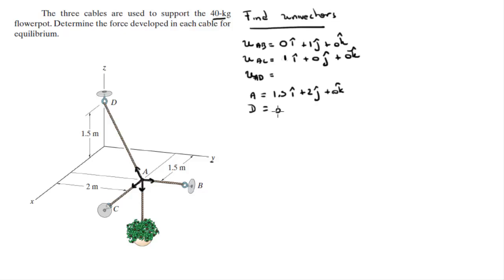A sits at 1.5 in the i plus 2 in the j plus 0 in the k, and D sits at 0 in the i plus 0 in the j plus 1.5 in the k. So the next thing you need to do is find the vector that goes from A to D, and to do that you got to do D minus A.